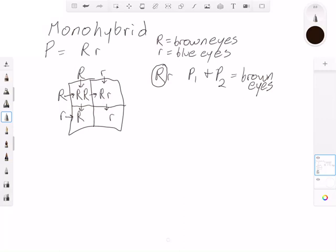Sometimes people end up writing a cross with the lowercase letter first and then the capital letter, and that does not change the genotype. They still have inherited a dominant trait, so this is still going to be brown eyes. The only way that the offspring can have blue eyes is if they inherit two lowercase letters.